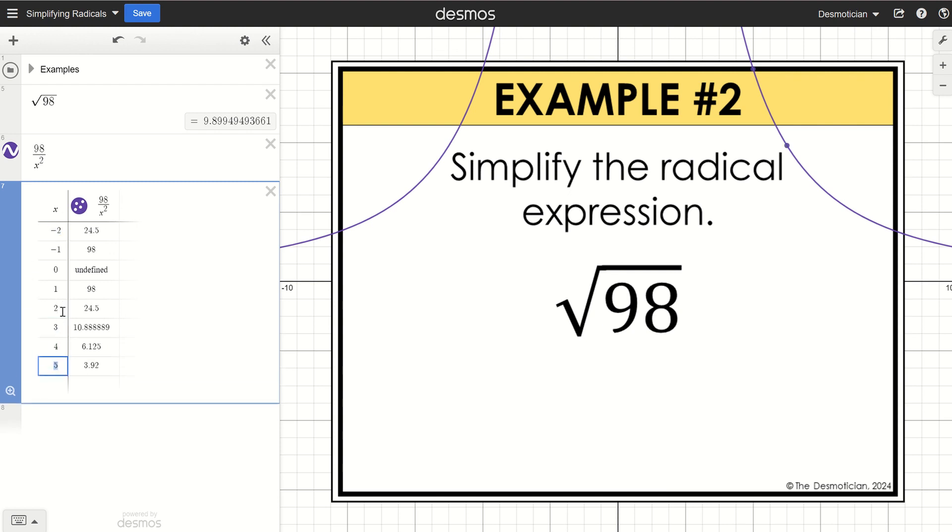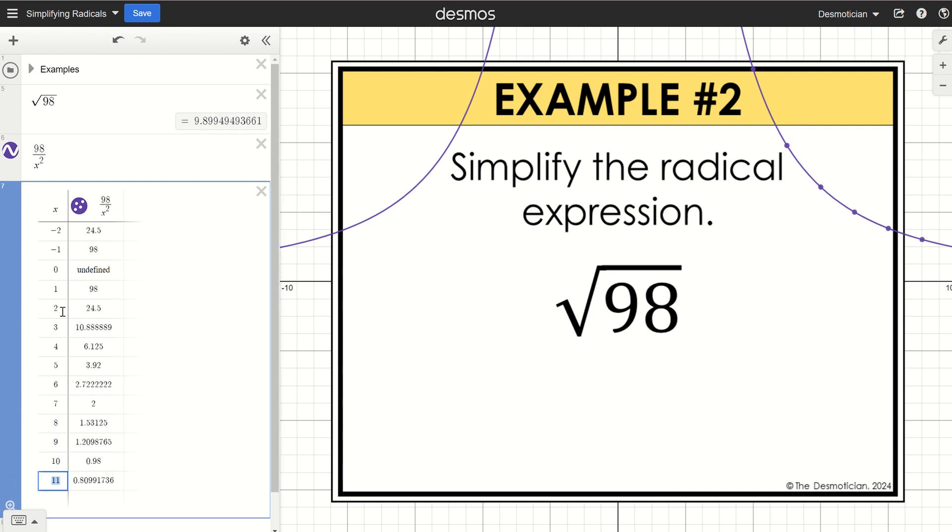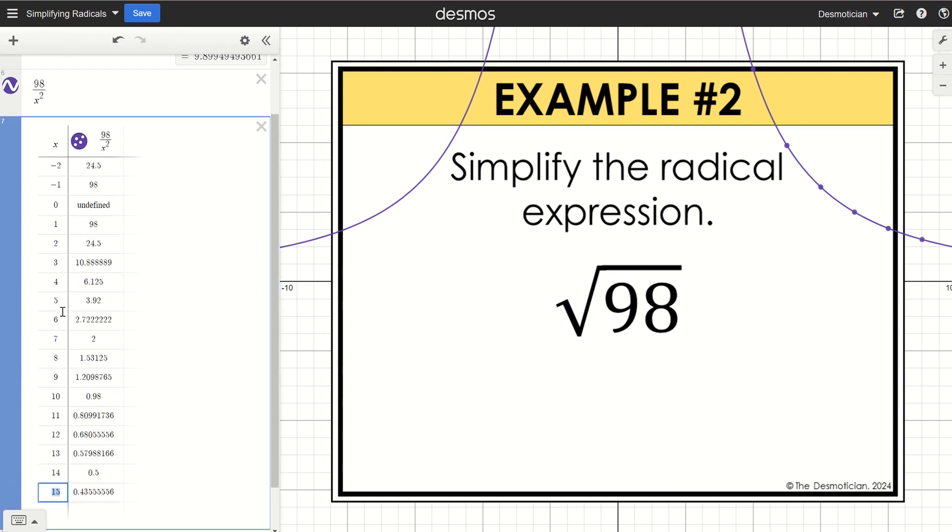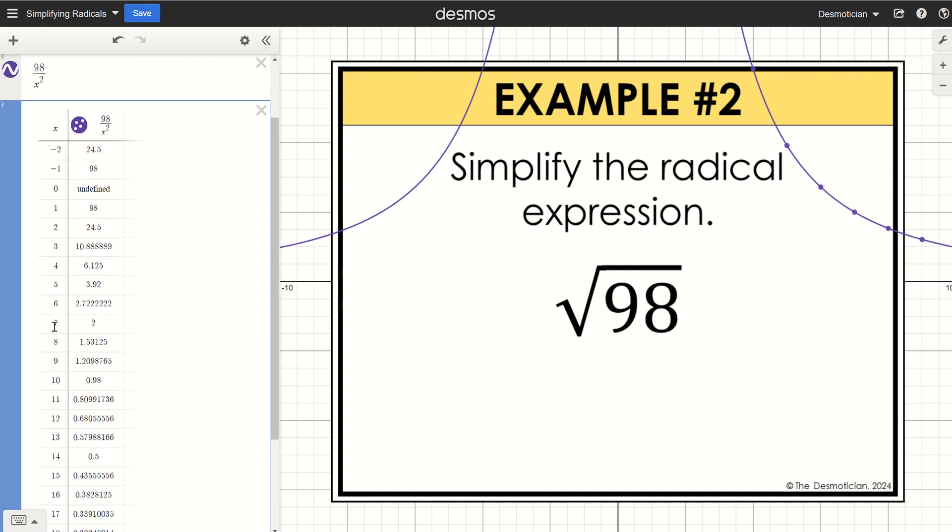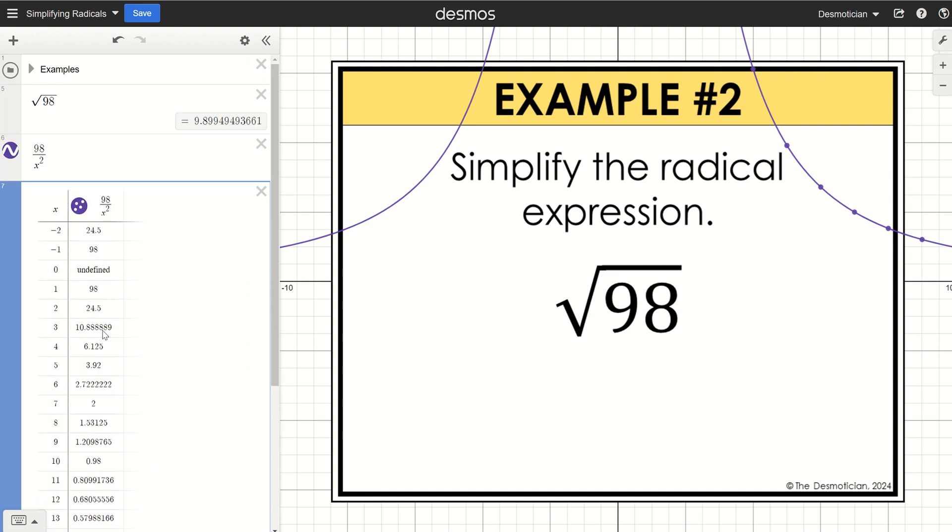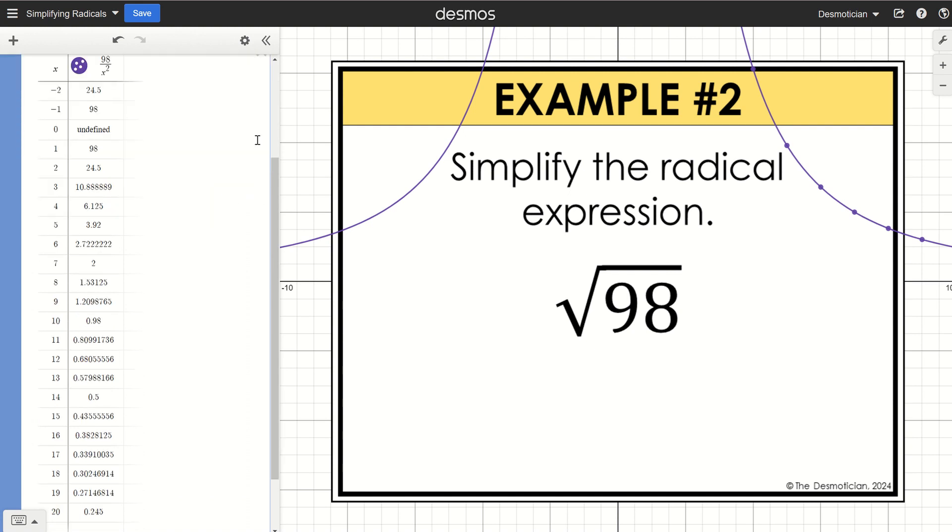Ideally it will be positive. So I see 2 and I'm going to keep clicking, but I don't see any other smaller values. So it looks like 7 and 2, which would let us rewrite this as 7 times the square root of 2.